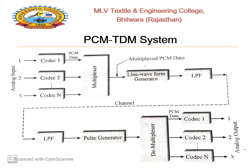The next slide represents the PCM-TDM system, which uses many codecs. A codec is basically a PCM encoder at the transmitter side and a decoder at the receiver side. The codec generates a serial stream of PCM data, and at the receiver side it receives serial PCM data and generates an analog signal. The sampling frequency can be selected by an external clock. One codec per channel is used in a PCM-TDM system.